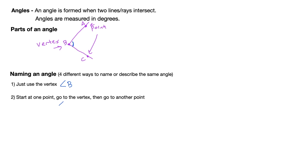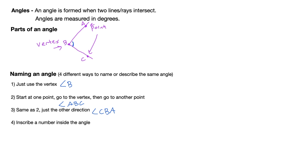We could write that as angle A, B, C — or conversely go in the other direction and say angle C, B, A. Both work. Finally, the last way is to inscribe a number inside the angle. So we could put the number one right there and simply call it angle one.